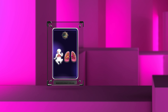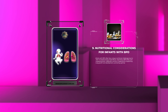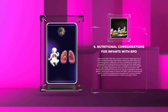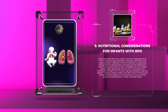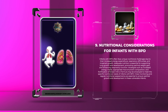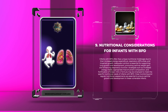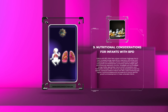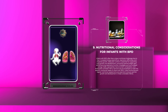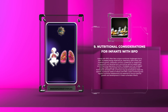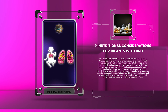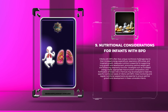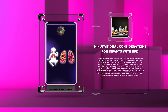Infants with BPD often face unique nutritional challenges due to their increased energy expenditure, respiratory difficulties, and impaired growth. Adequate nutrition is essential for supporting lung growth and development, promoting optimal weight gain, and enhancing respiratory function. Strategies such as increased energy intake, appropriate macronutrient composition, and fortification of breast milk or formula may be employed. Close monitoring and regular nutritional assessments are essential to ensure optimal growth and development in these vulnerable infants.